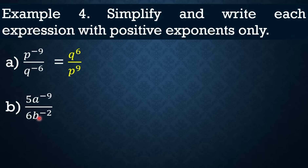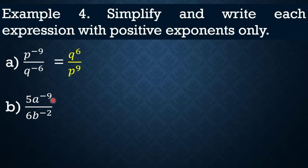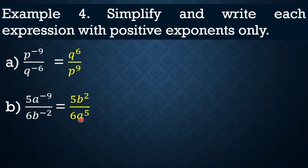Similarly, for 5A raised to negative 9 over 6B raised to negative 2: the coefficients 5 and 6 stay in their positions since they don't have negative exponents. Only A raised to negative 9 and B raised to negative 2 swap places. So the answer is 5B squared over 6A raised to 9.